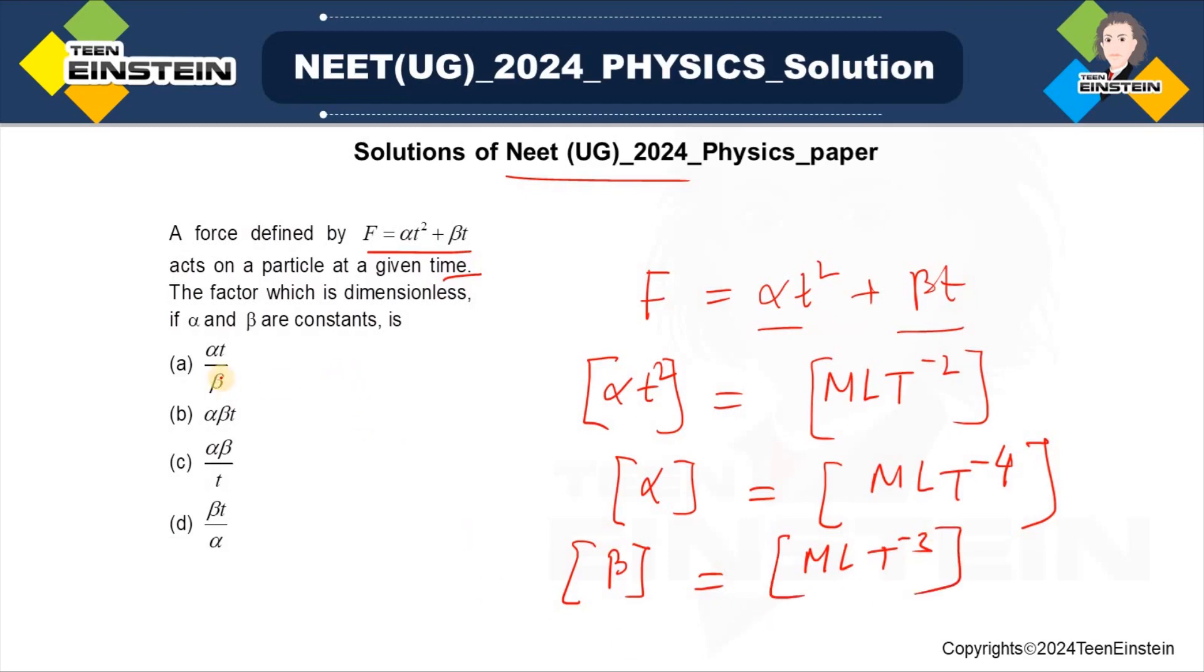Now, you can cross-check each and every term, but let us see this term first: alpha by beta into T.